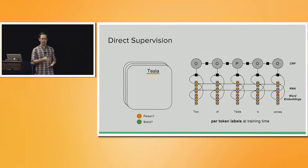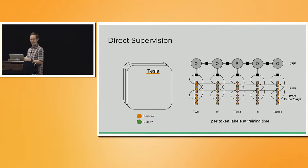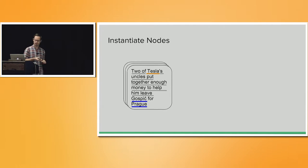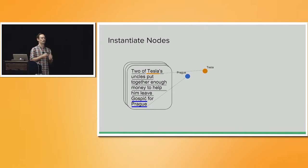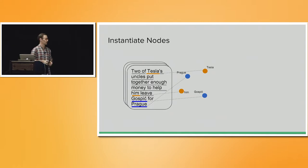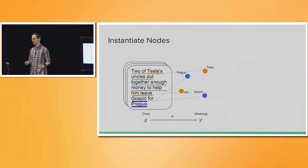In terms of how we train this, usually when we look at NER, we have direct supervision at training time — per-token labels from a corpus of NER tags associated with tokens. I'm noting this because it will be contrasted with other types of supervision later on. Once we have labeled these mentions, we can extract from them the actual nodes of the graph we want to produce — taking Tesla, Prague, and Gospic and creating nodes, and also instantiating nodes for pronouns, which will be useful later.